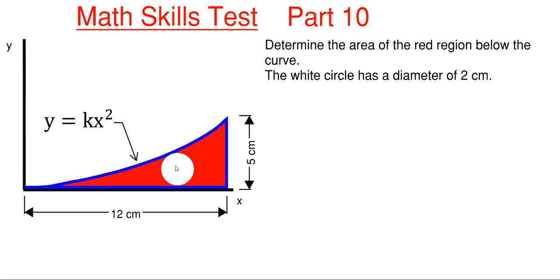So how do we do this? Well we are going to use direct integration to get the total area under this curve of y equals kx squared. Once we get the total area underneath the curve we can just simply subtract out the area of a circle which is pi d squared over 4 and then we can get the area shown in red.